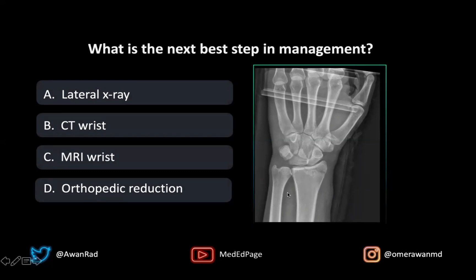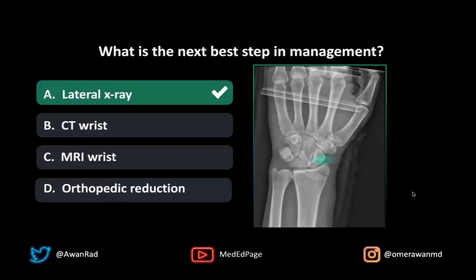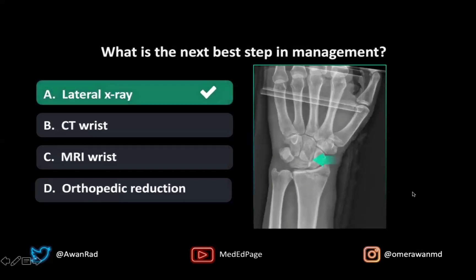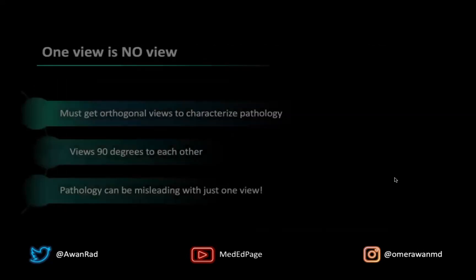So the next best step here would be to get a lateral x-ray, because we don't know what this is. Based on this image, it could actually be one of four things: a scapholunate rotary subluxation, a perilunate dislocation, a mid-carpal dislocation, or even a lunate dislocation. We don't know unless we see a lateral view.